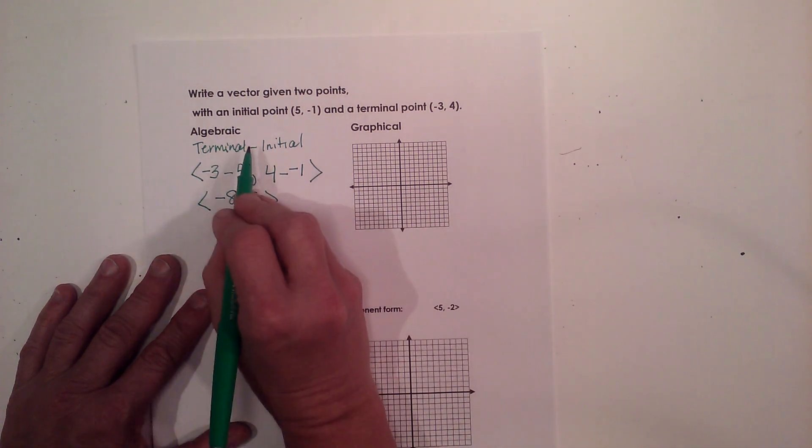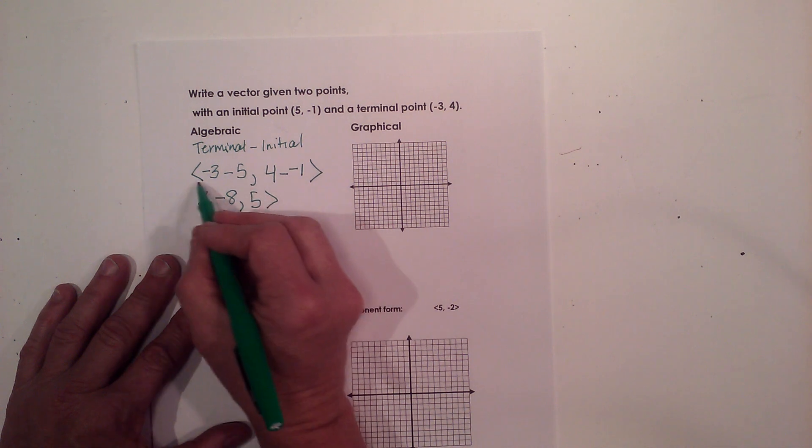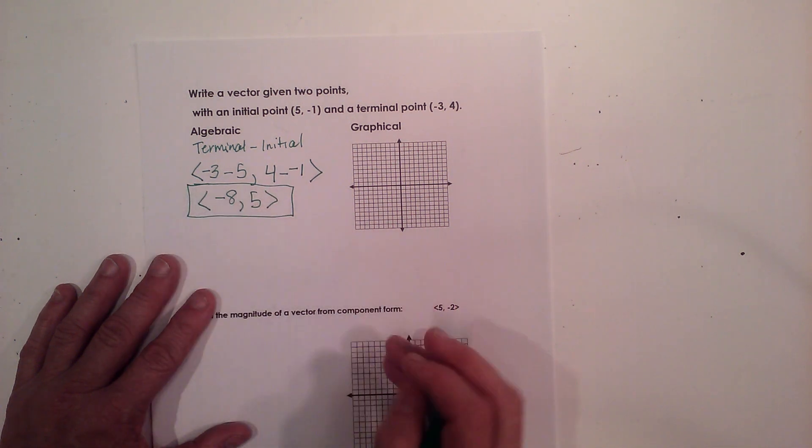So that means I'm going vertically positive 5. So that's how I find a vector algebraically.